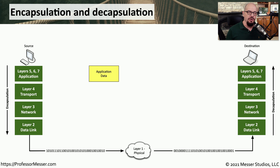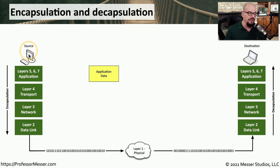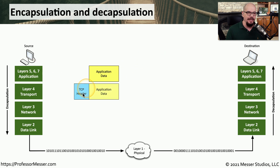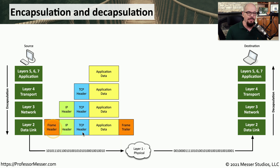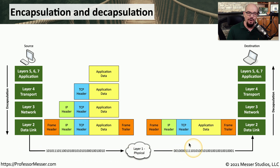Let's expand this view to show both the sending and receiving device and see the way the network might interoperate with all of this. There's our application data at OSI layers 5, 6, and 7. On the left side is the source address that's sending this data, and we somehow want to get that application data to the destination device on the other side of the network. We'll start by encapsulating this data by including a TCP header, an IP header, and ultimately the frame header and frame trailer. That information is going to be sent across the network, where it will then be received by the destination device.